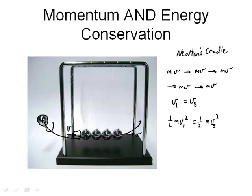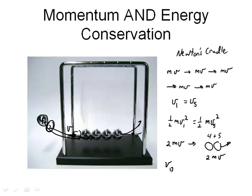But what would happen if two spheres — number one and number two — were sitting up here and they come down and hit? Now I have 2mv, and that strikes three, which strikes four and five. What happens is four and five move out with the same velocity: 2m times the same velocity. So the velocity of one and two coming in equals the velocity of four and five going out.